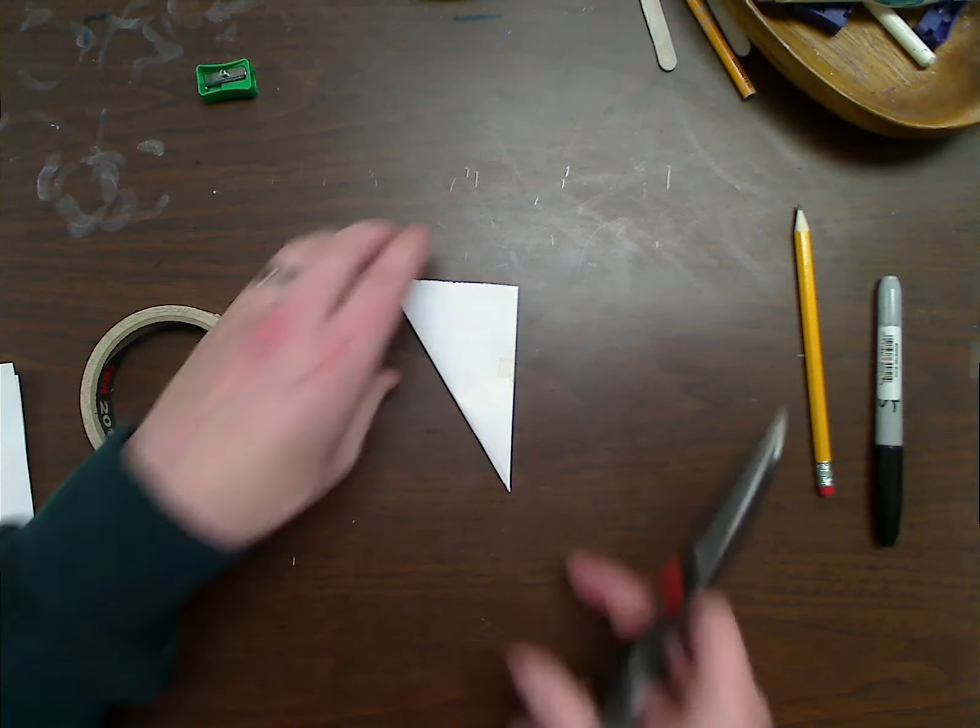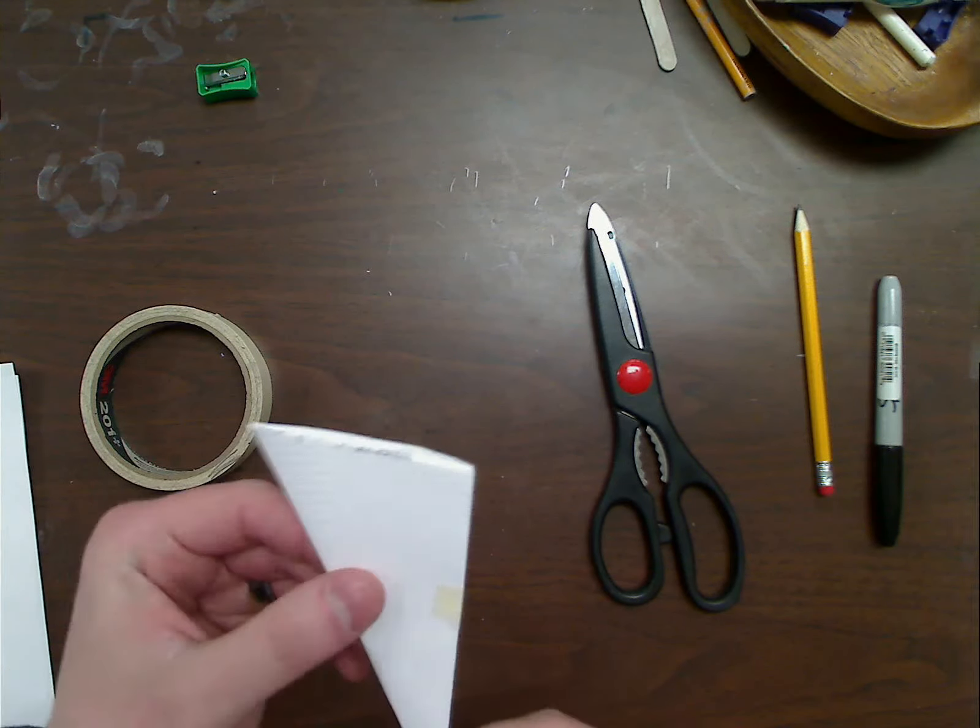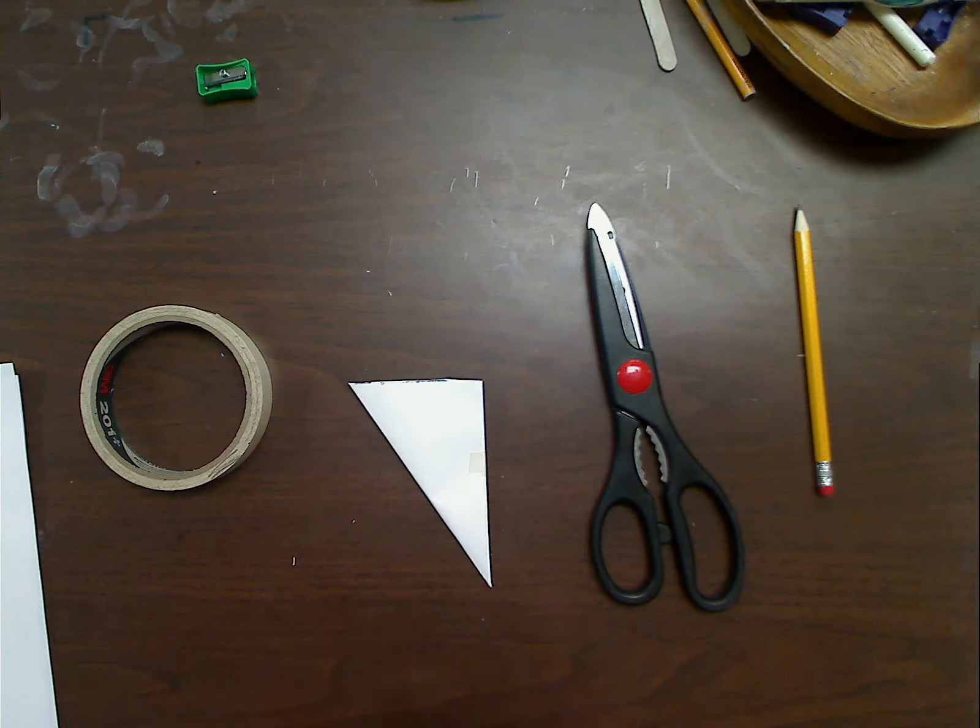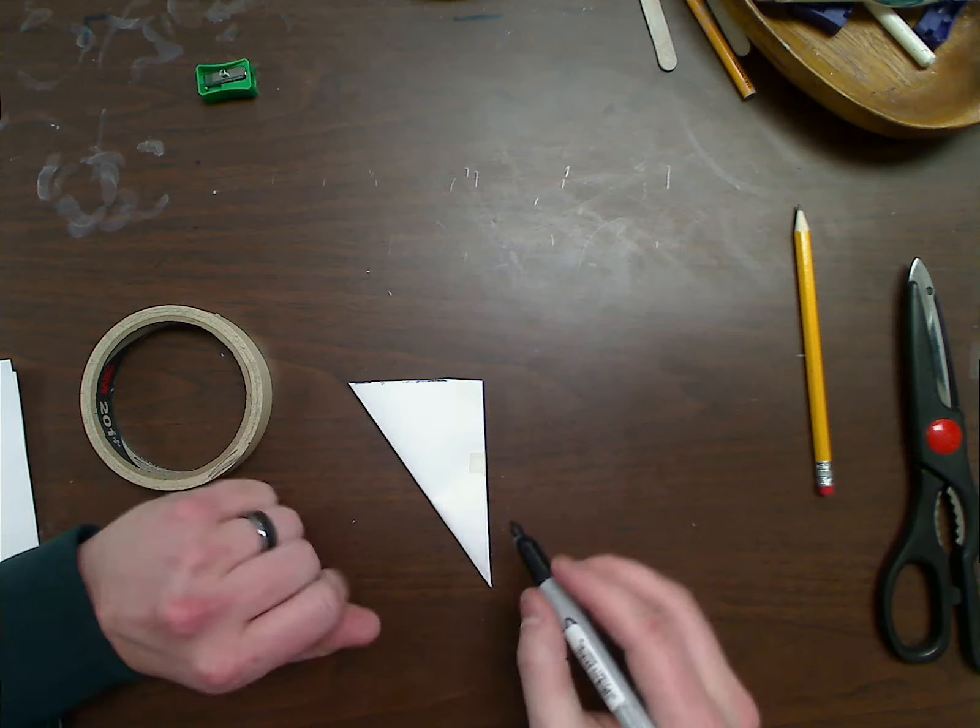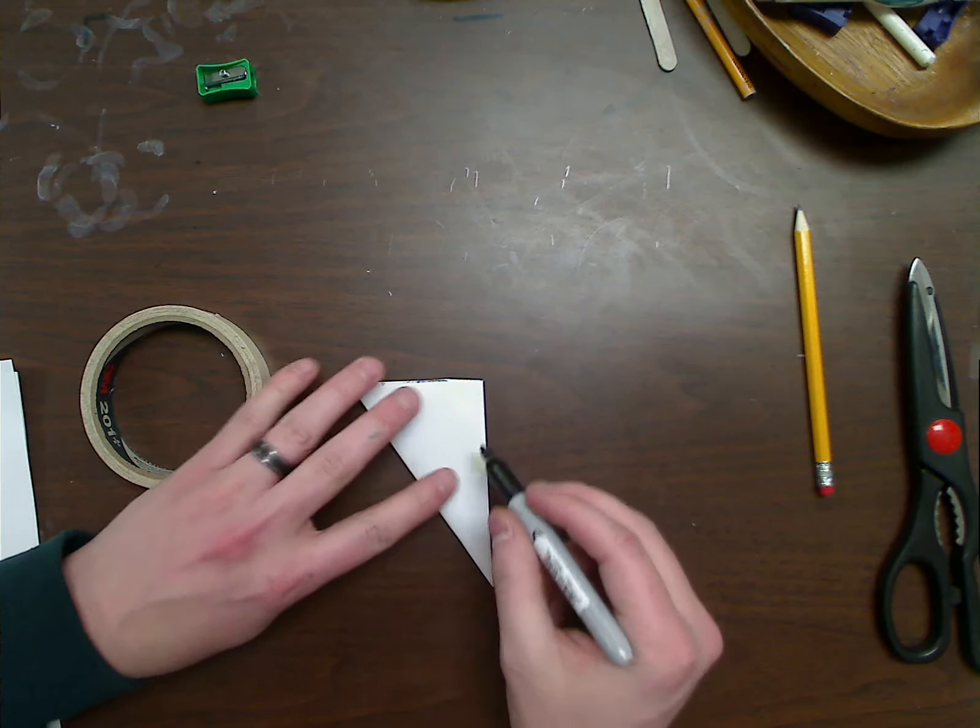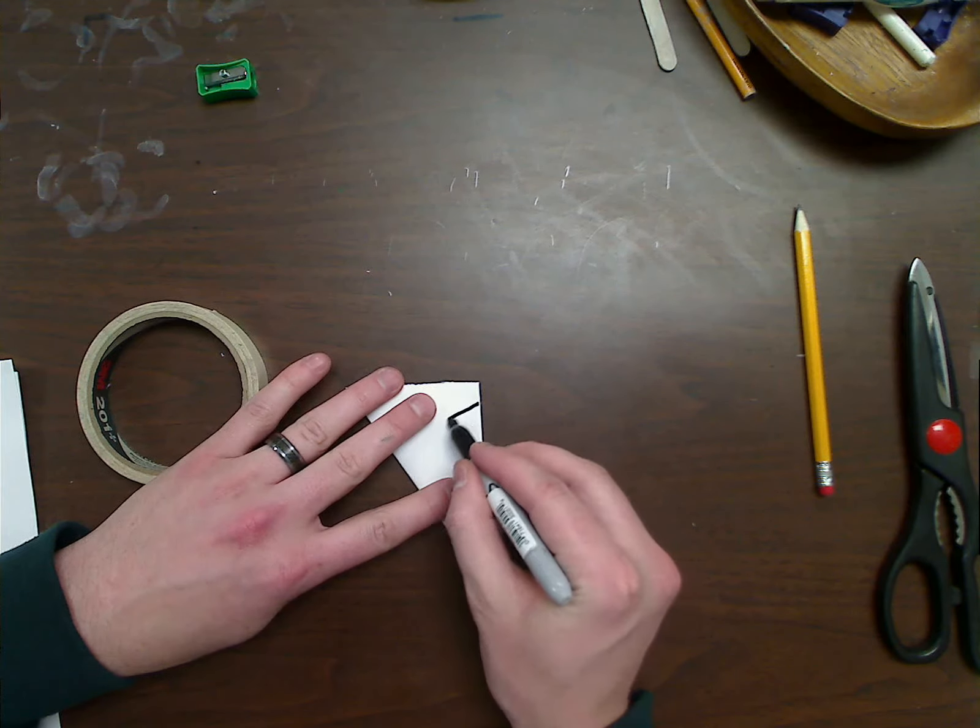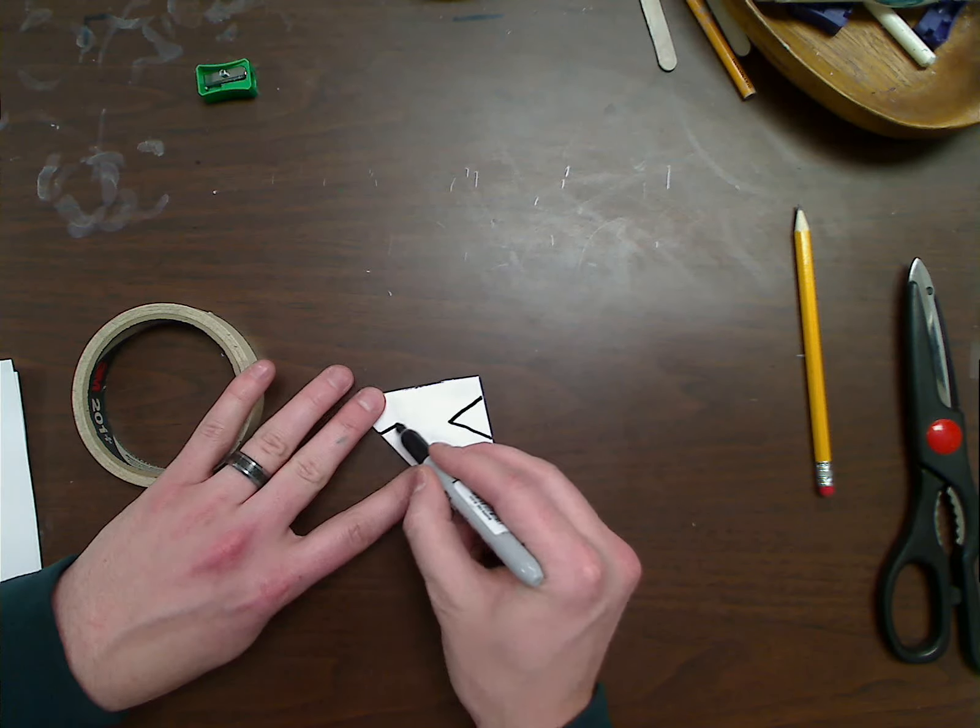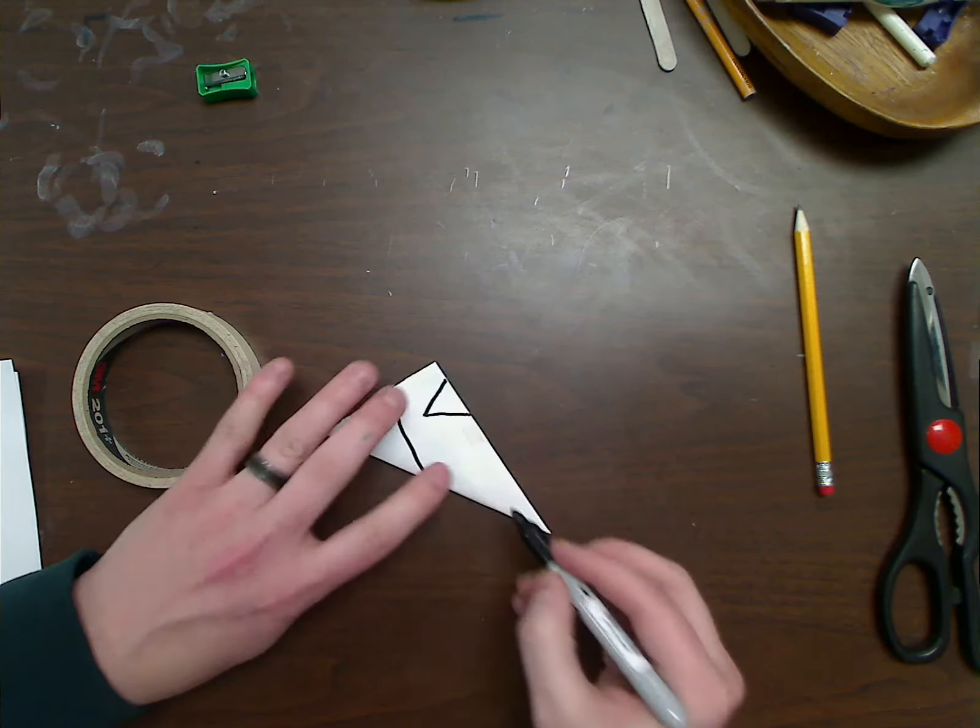And from there, once you have your triangle, you're ready to start decorating your snowflake. We'll probably want to do just a few shapes to start with. They're going to be little simple shapes. You can use a pencil for this. Little triangles are easy.